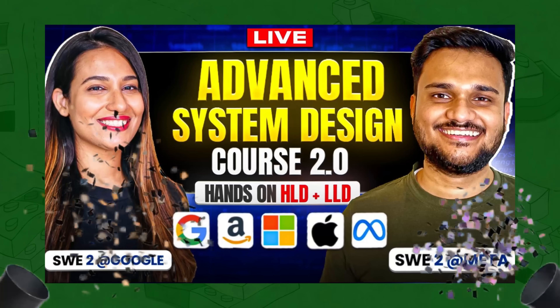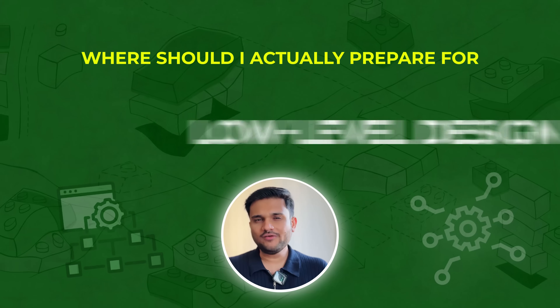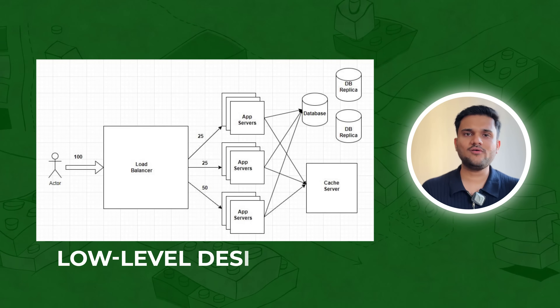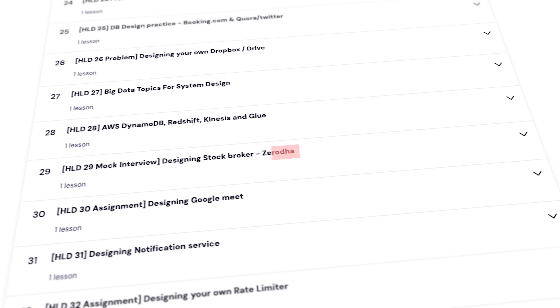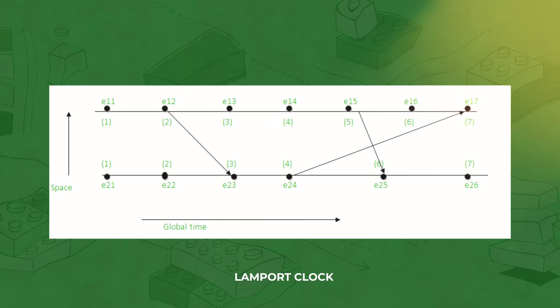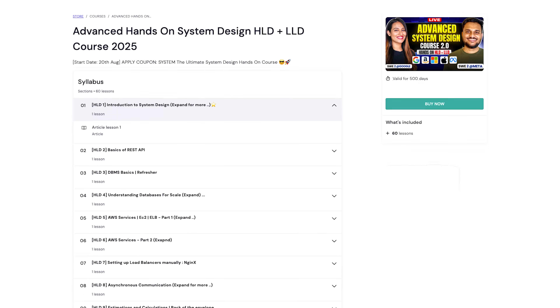Before moving forward I'd like to talk about the new System Design 2.0 cohort we recently launched. If you're somebody willing to apply for product-based companies and are confused about where to prepare for low level design, high level design, and machine coding rounds, you're at the right place. The new cohort includes all relevant concepts around high level design, low level design, and machine coding — bigger and better this time. We've specifically added company-specific interview problem solving in both HLD and LLD, plus interesting concepts around distributed systems like Lamport clock, vector clock, and consensus algorithms. The complete curriculum is in the description below.